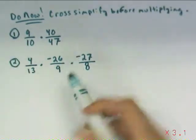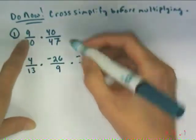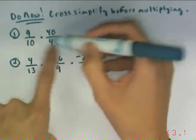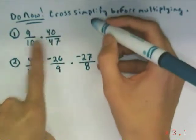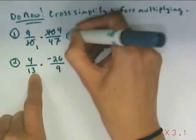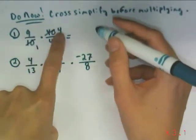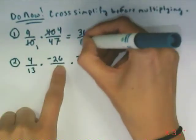So with example 1, I'm looking in both directions. I'm looking at a 9 on the top and a 47 on the bottom. 9 and 47 are relatively primed to each other. But I look at the top in the other direction, and I see 40 over 10 becomes 4 over 1. And now when I multiply across the top, 9 times 3, 9 times 4 is 36, 1 times 47 is 47.